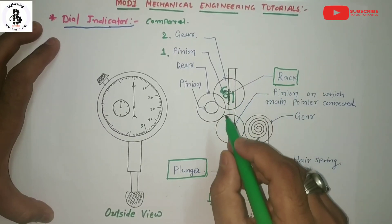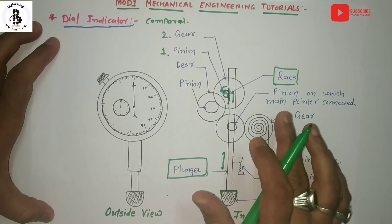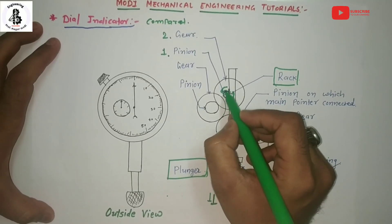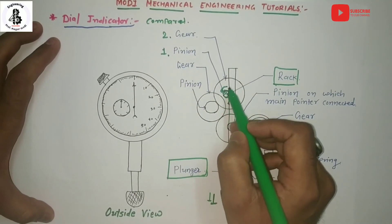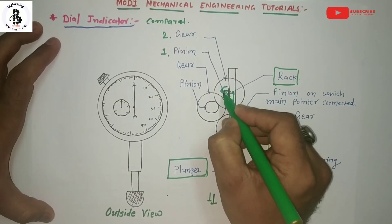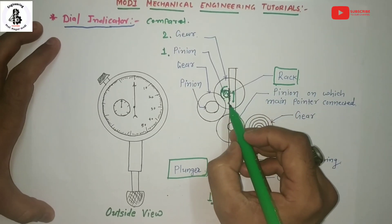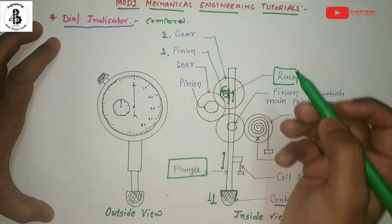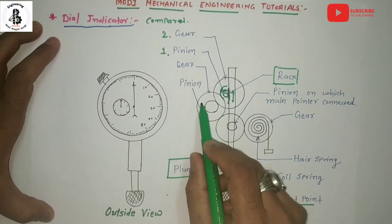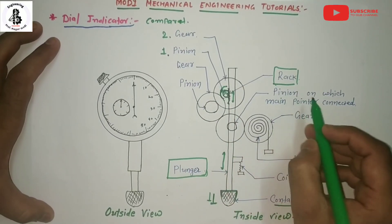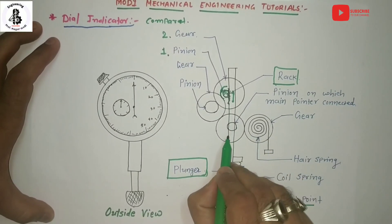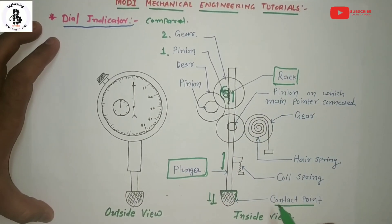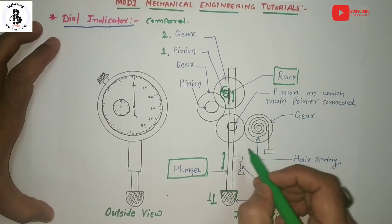This is the basic mechanical concept used for the indication — reciprocating motion is converted into rotary motion. First, through the pinion connected to the gear, this pinion and gear rotate. That gear and pinion mechanism is once again connected to another pinion-gear mechanism. One more pinion-gear mechanism connects to the pinion on which the main pointer is attached. So by the up and down movement of the contact point, all these components rotate according to their connectivity.